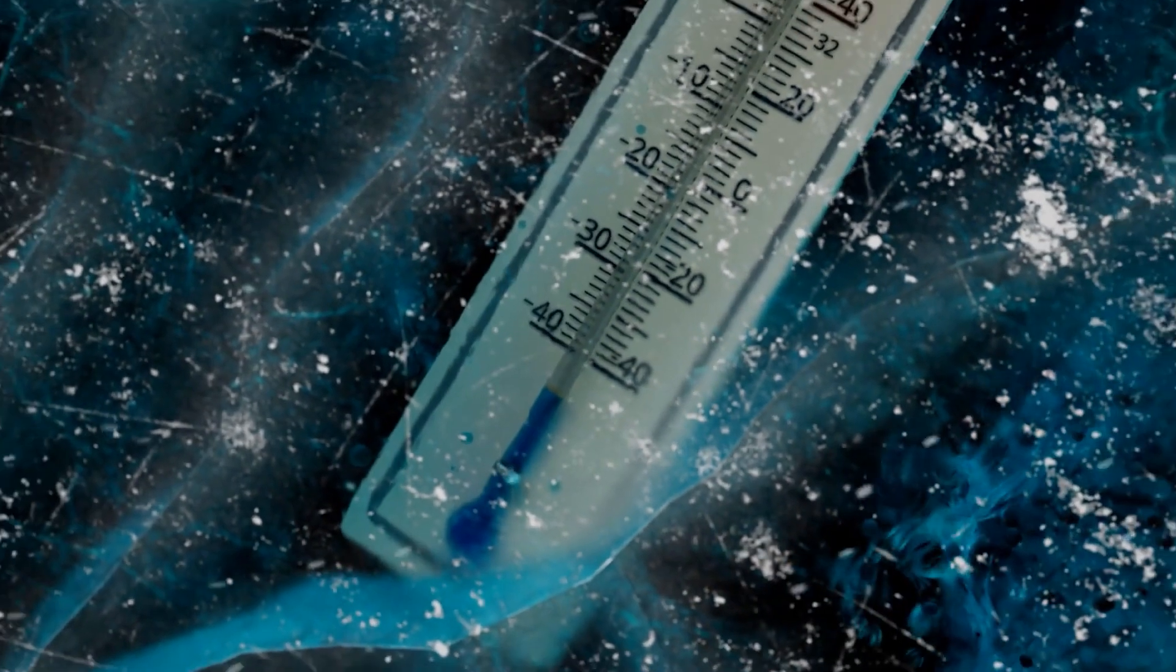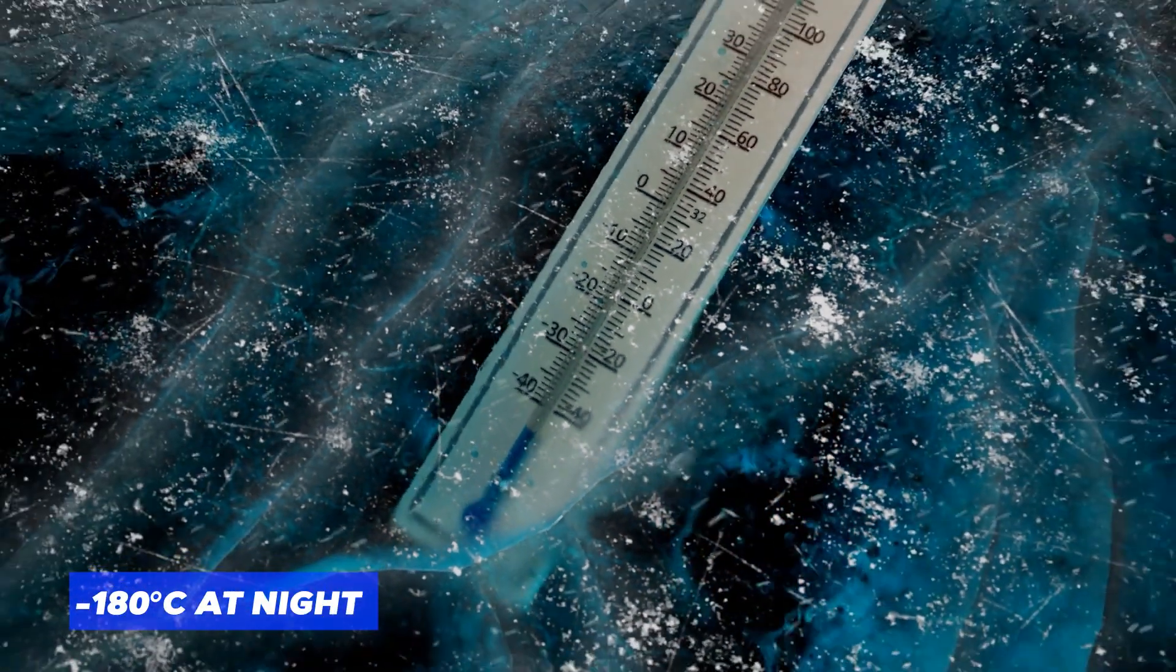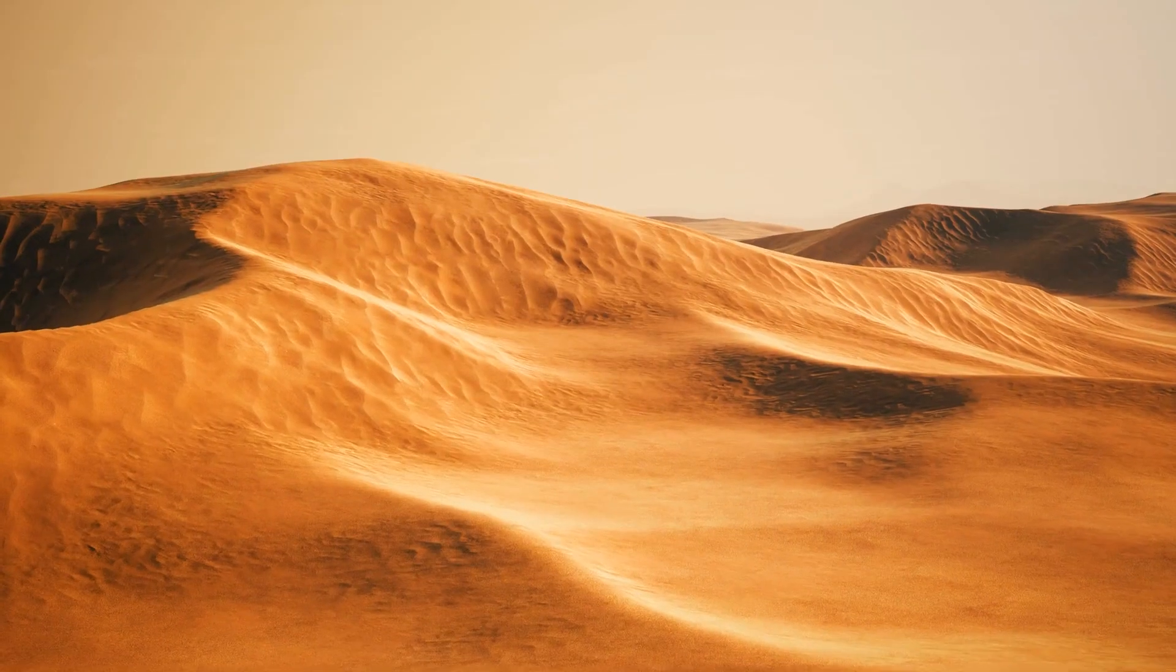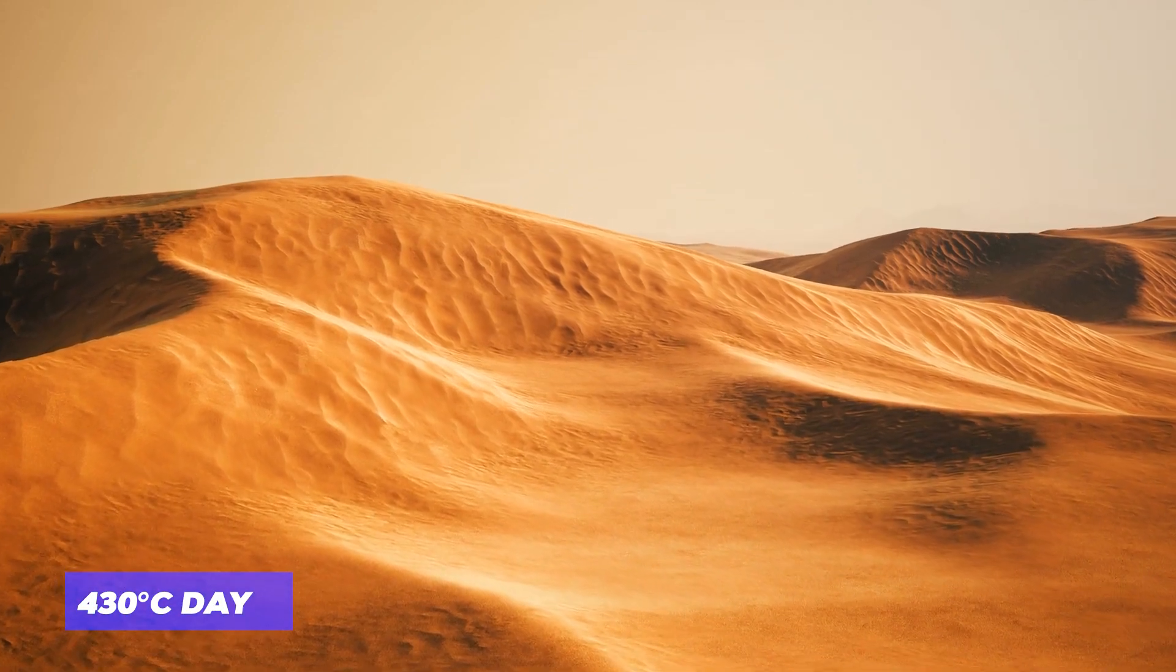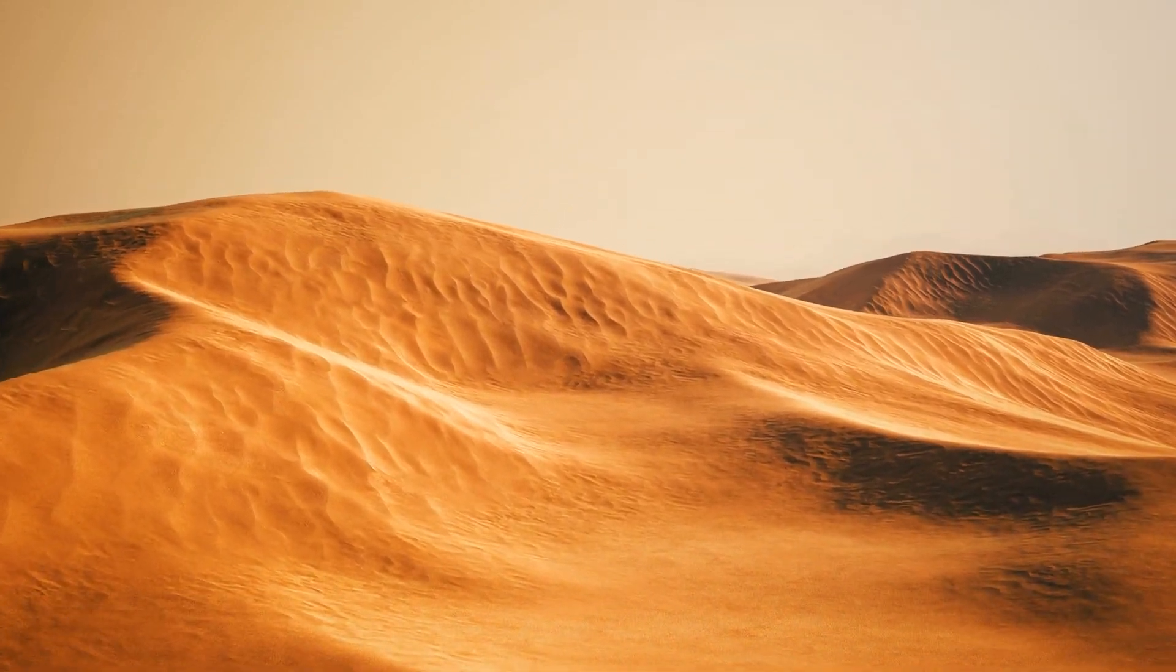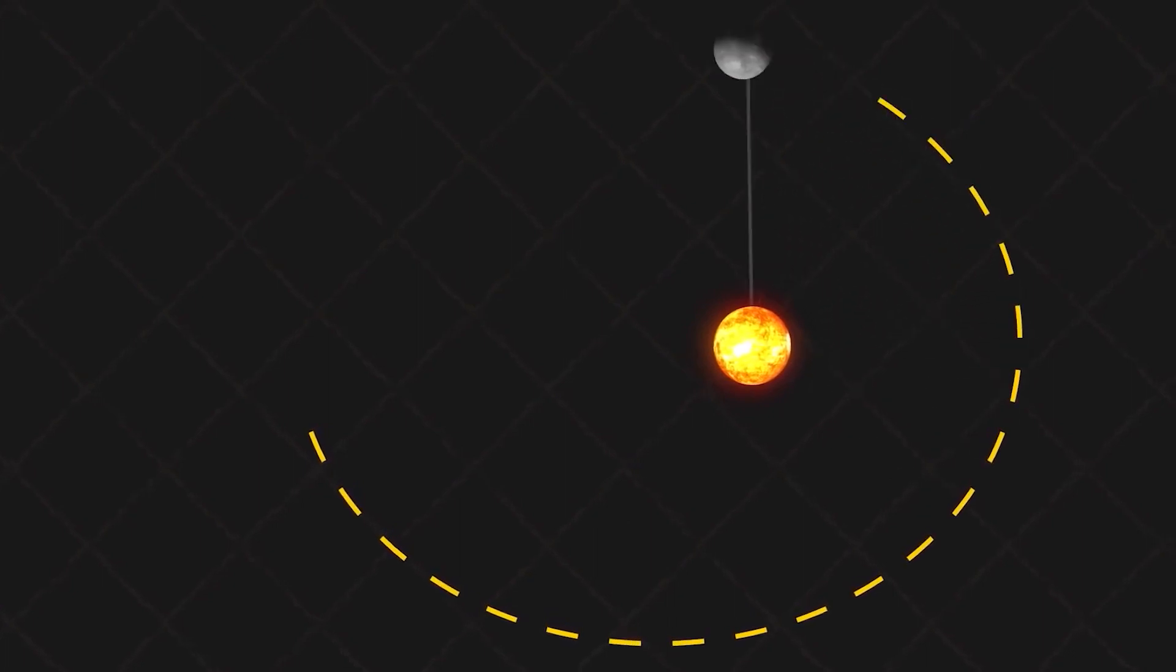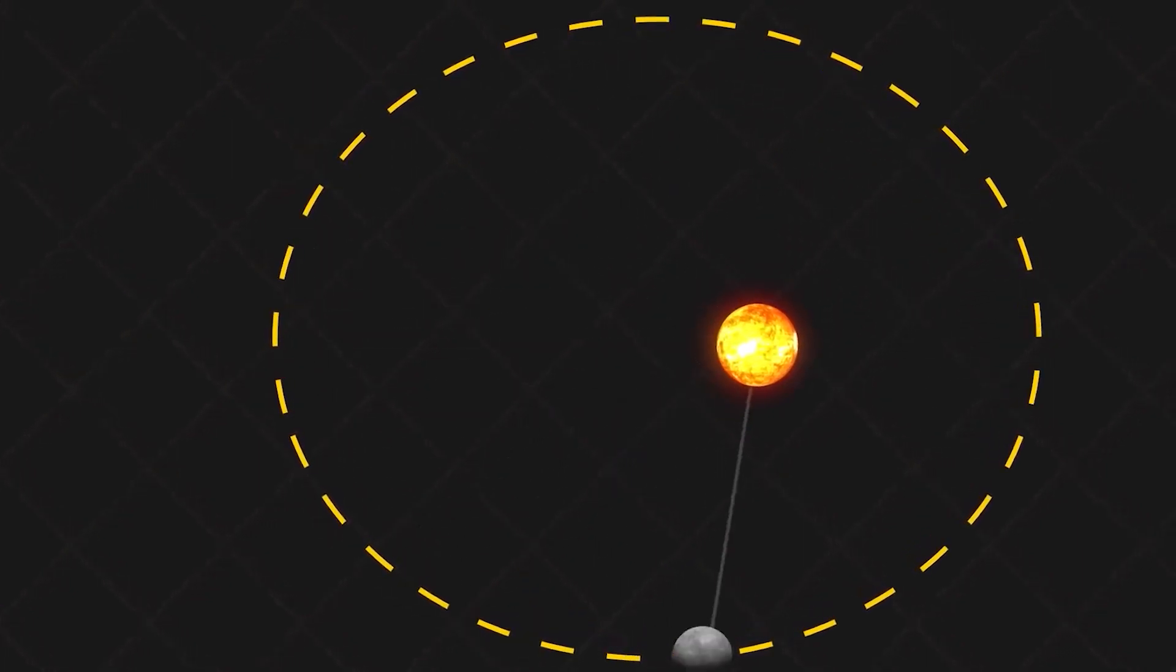Temperatures swing wildly from minus 180 degrees Celsius at night to a blistering 430 degrees Celsius during the day. Plus, it has a highly eccentric, egg-shaped orbit with a day longer than its year.